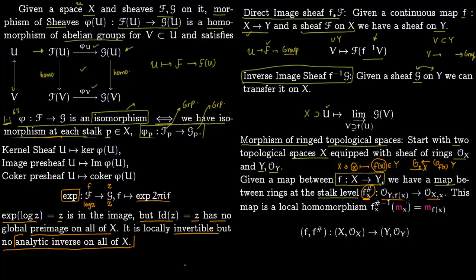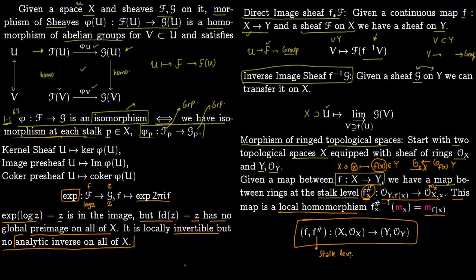This stalk-level map f^# is a local homomorphism: the inverse image of a maximal ideal here is also a maximal ideal. It is generally written with f as the map between X and Y and f^# as the map given at the stalk level. At the stalk level you just have two points: point x in X gets mapped to f(x) in Y.